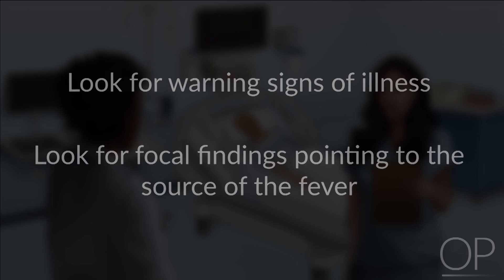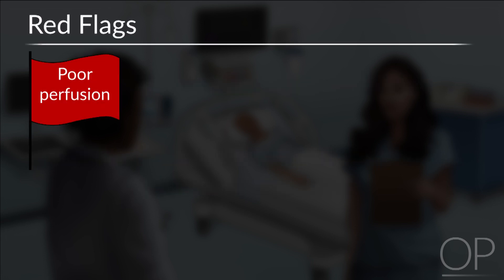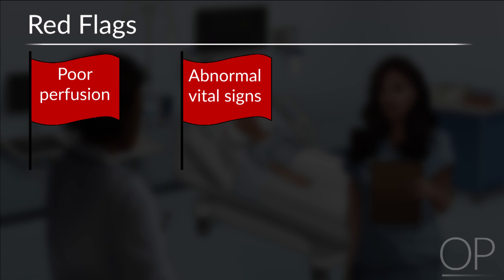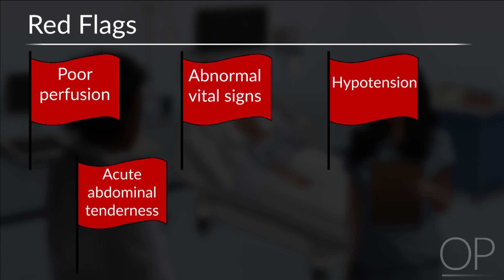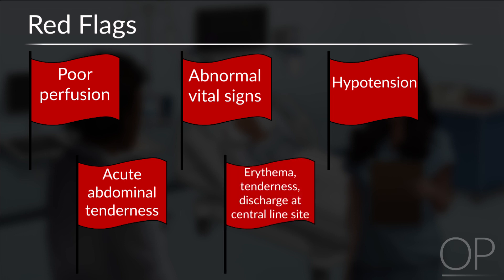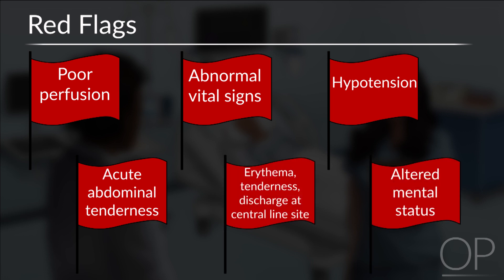Red flags include poor perfusion, abnormal or unstable vital signs, hypotension, acute abdominal tenderness, or erythema, tenderness, or discharge at the central line site, and finally altered mental status.